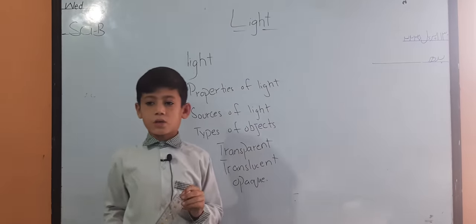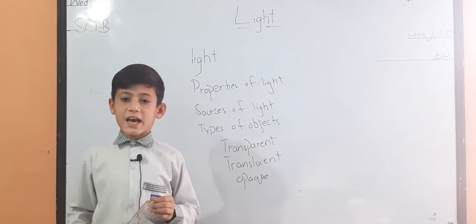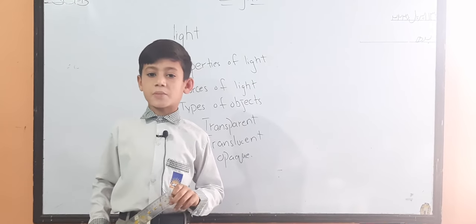Properties of light. Travel is a straight line. Light speed is 3.0 km in one second. Light forms shadow.